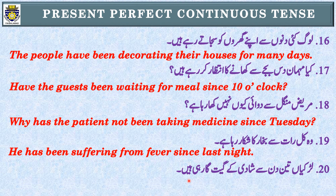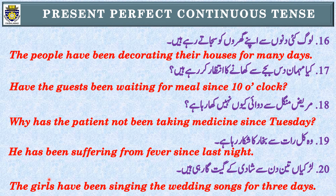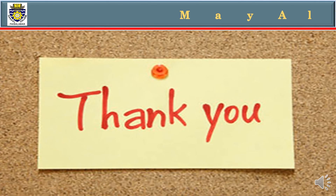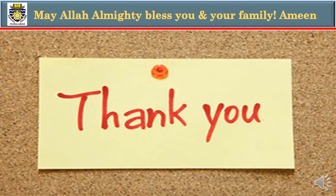Sentence 20: 'لڑکیاں تین دن سے شادی کے گیت گا رہی ہیں۔' Identification: 'رہی ہیں' اور 'تین دن سے' یعنی duration — Present Perfect Continuous Tense۔ Subject: 'لڑکیاں' یعنی girls — plural — have been۔ The girls have been singing wedding songs for three days.